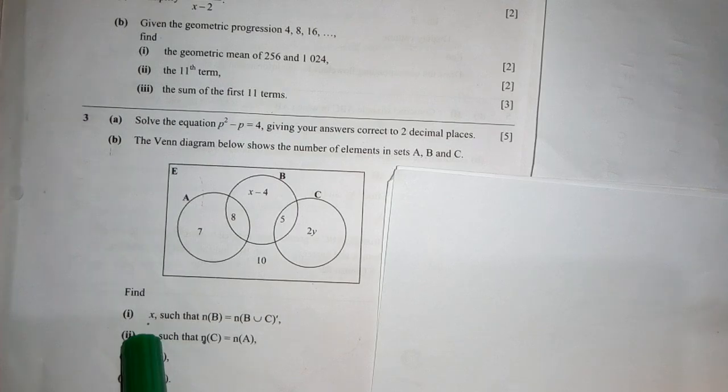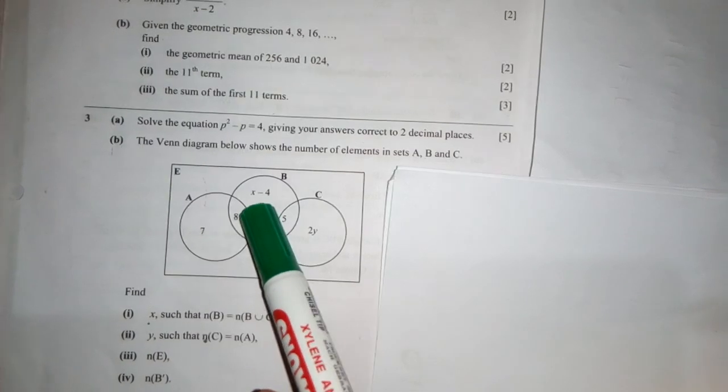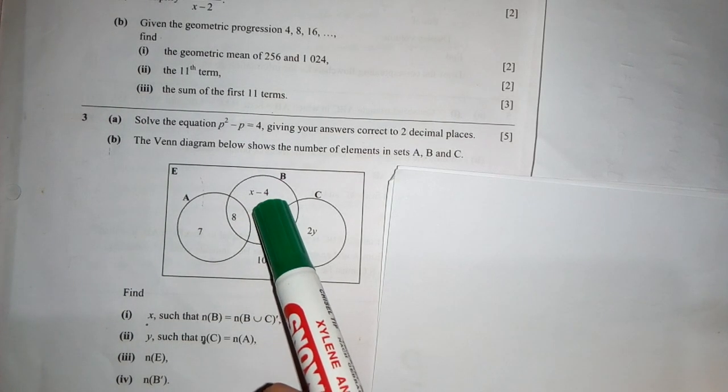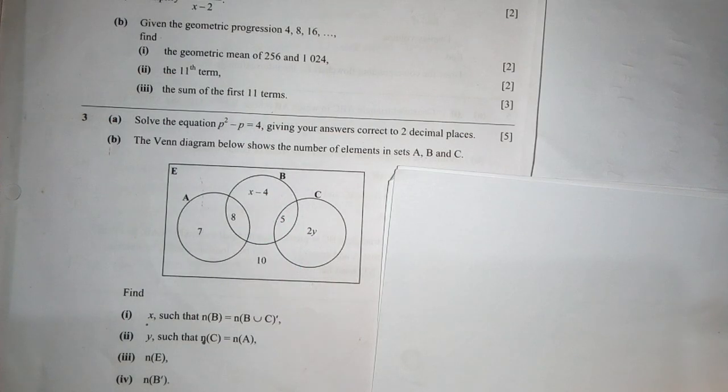We have been asked to find the value of x. So you can see x over there in set B. So how do we find the value of x? We have been given the statement here: number of elements in B equal to number of elements in B union C complement.